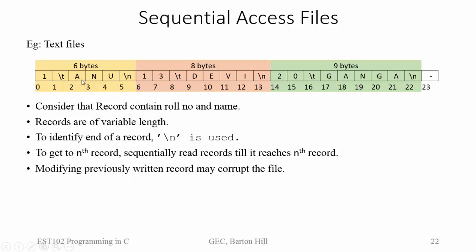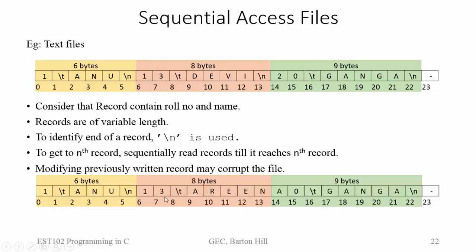One more thing to note: here we are only allocating space for the actual content. If in the future we want to modify a particular record, and if the role number or name has one more character than the previously written one, it may corrupt the file. For example, if we change the name from 'Devi' to 'Arena', it will write A-R-E-E-N-A, overwriting that particular character. Next time when we read the record, the overwritten portion and the adjacent portion will be interpreted as one record by the compiler. So modifying a previously written record may corrupt the file.